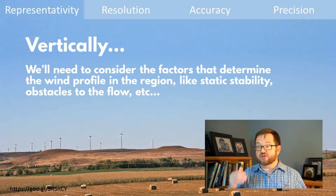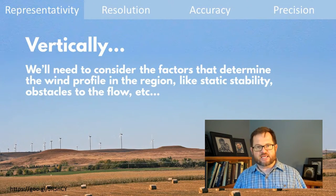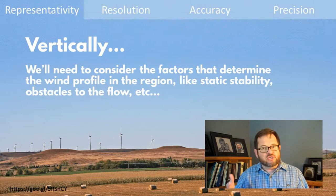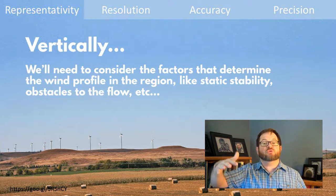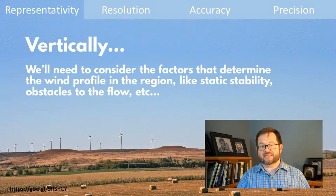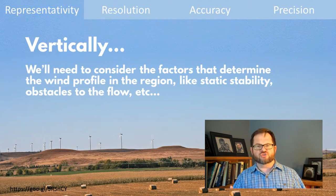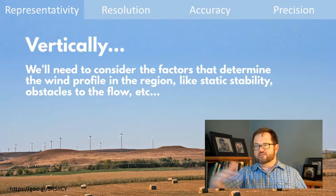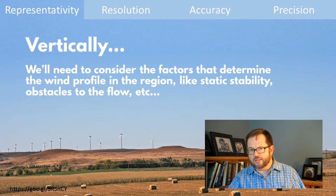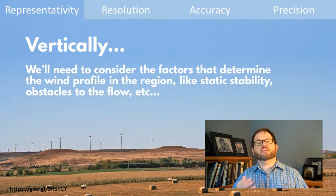Vertically, we need to consider factors that will help us decide, for an instrumented mast, how many sensors we need to be representative of what the wind turbine would be experiencing. We'll need to understand the wind profile of the region — how winds change with height at this location — which depends on things like static stability, determining how easily the atmosphere produces turbulence. A low line of trees might be disrupting the flow, but maybe only in the lowest 20 meters, and your turbine doesn't extract power that low to the ground anyway.